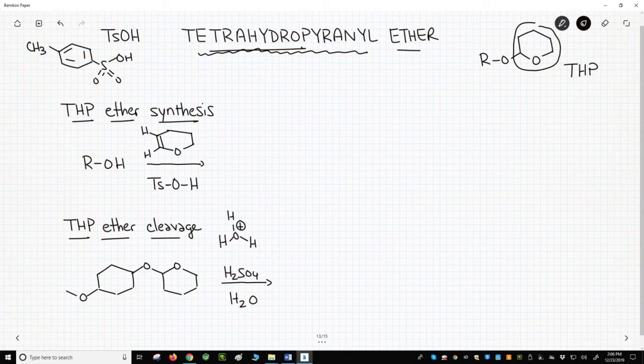Before talking about reactivity, let's see how to make a THP ether. THP ethers are made by reacting an alcohol with an alkene called dihydropyrane in the presence of a small amount of a strong acid.